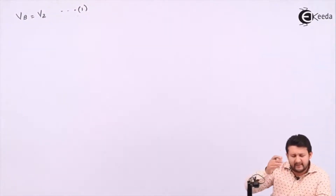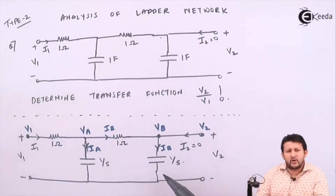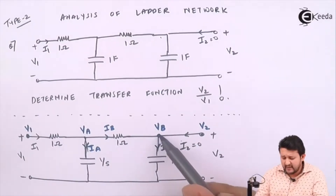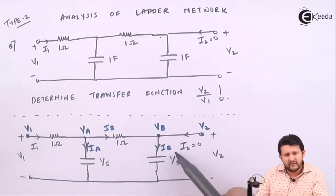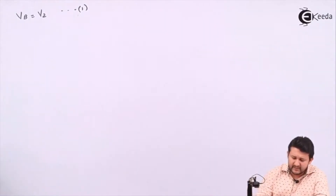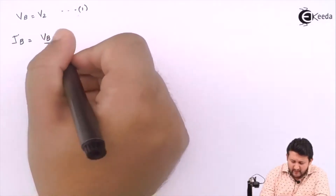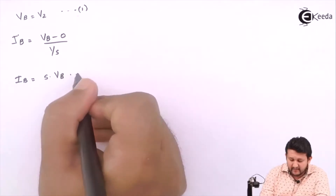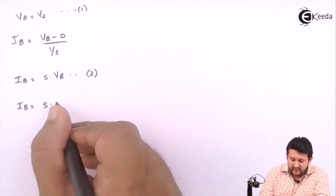Now let's talk about vertical. For the vertical path, I need to find current. When I apply Ohm's law — V equals IR — if I need to find current, it will be V divided by R. So applying Ohm's law, Ib current is flowing from this point to this point. It will be Vb minus zero upon the impedance, which is 1/S. So Ib equals Vb minus zero divided by 1/S, which gives S times Vb. Replacing Vb with V2, we get Ib equals S times V2.